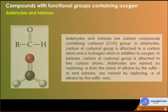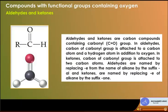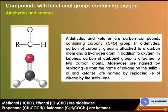Aldehydes and ketones are carbon compounds containing a carbonyl (C=O) group. In aldehydes, the carbonyl carbon is attached to a carbon atom and a hydrogen atom in addition to oxygen. In ketones, the carbonyl carbon is attached to two carbon atoms. Aldehydes are named by replacing '-e' of the alkane with the suffix '-al', and ketones with the suffix '-one'. Examples of aldehydes: methanal (HCHO) and ethanal (CH3CHO). Examples of ketones: propanone (CH3COCH3) and butanone (C2H5COCH3).